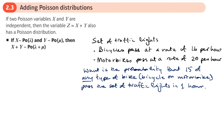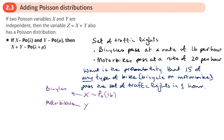Let's use X to stand for the number of bicycles that pass this set of traffic lights in one hour. That random variable can be modelled with a Poisson distribution with a rate of 16. For the motorbikes, let's use the letter Y — that can be modelled by a Poisson distribution at 20 per hour.